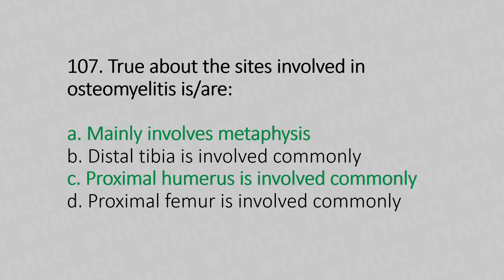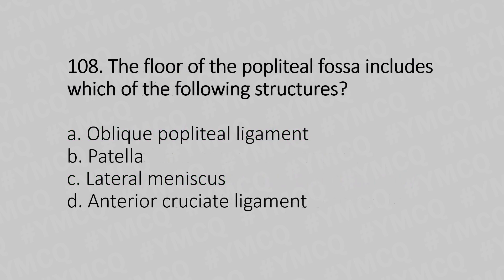Now let's move to question number 108. The floor of the popliteal fossa includes which of the following structures? Option A, oblique popliteal ligament. Option B, patella. Option C, lateral meniscus. Option D, anterior cruciate ligament. And the answer is Option A, oblique popliteal ligament.